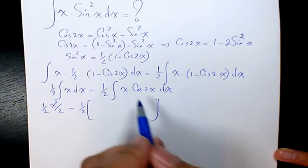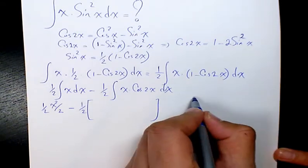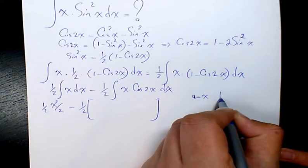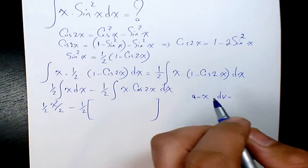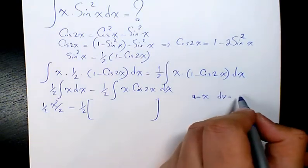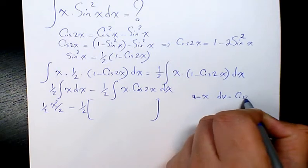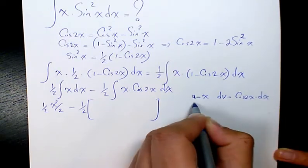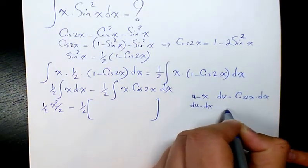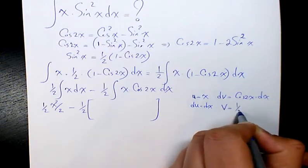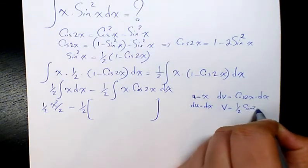We need to do integration by parts, so I consider u as x and dv as cosine 2x dx. Then du will be dx and v will be 1 over 2 sine 2x.